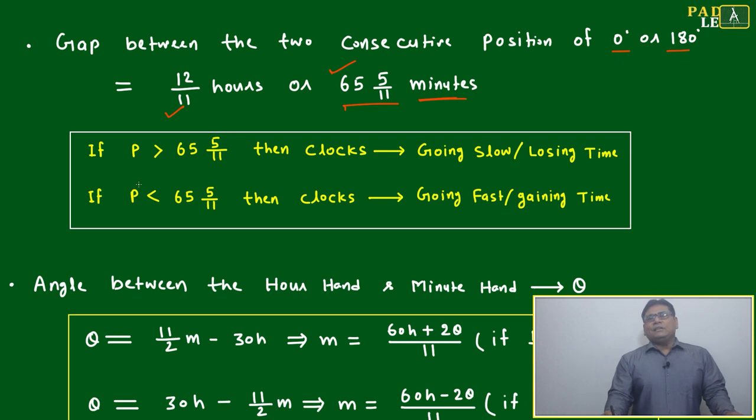Suppose for any clock, the value of p—which is the time duration between two consecutive positions of the hour and minute hand at either zero degrees or 180 degrees—if p is more than 65 and 5 by 11 minutes, then the clock is going slow, or losing time. If p is less than 65 and 5 by 11 minutes, then the clock is going too fast, or gaining time.